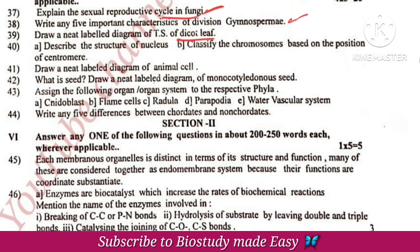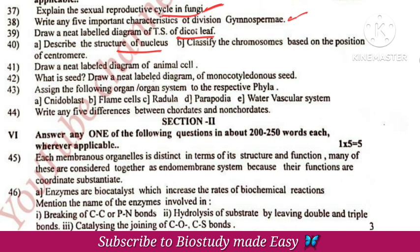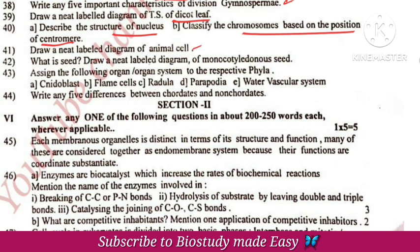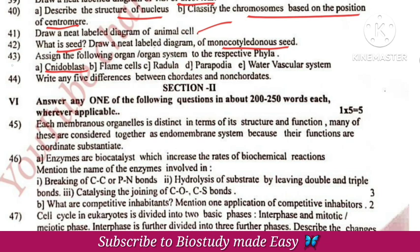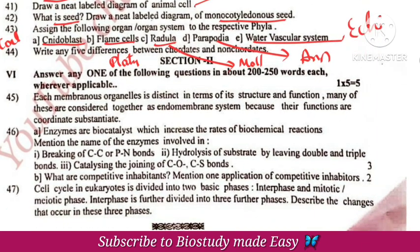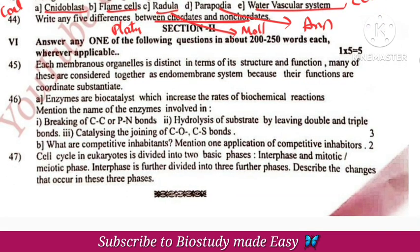Gymnosperms — dicot leaf diagram and nucleus diagram. Chromosomes are classified based on centromere position. Animal cell diagram. Monocot seed diagram — seed is nothing but a fertilized ovule. Cnidoblast — phylum Coelenterata; flame cells — Platyhelminthes. Mollusca — parapodia in Annelida. Water vascular system in Echinodermata. The difference between chordates and non-chordates is important from the textbook.